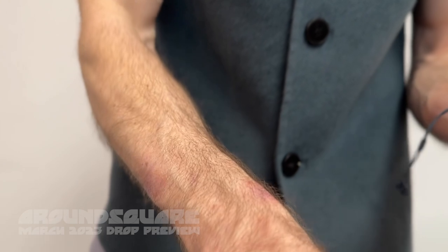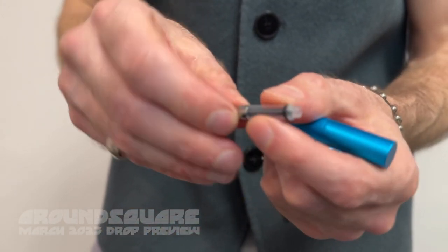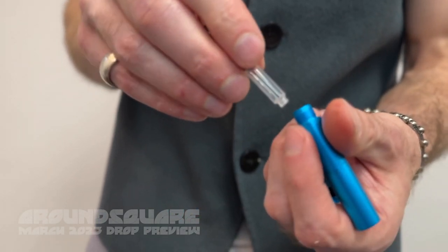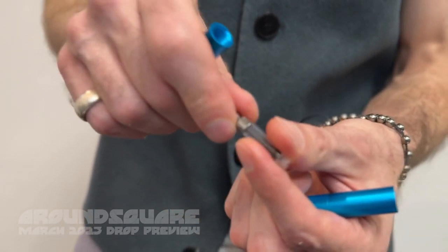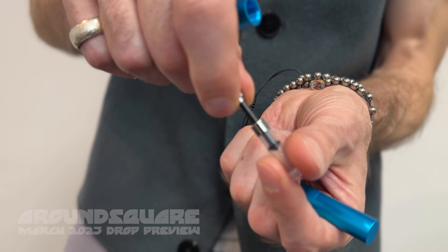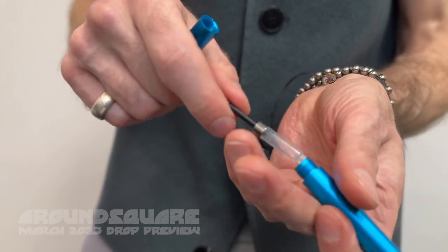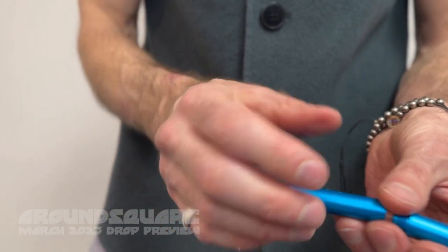If you want to use bottled ink, you can use one of these little converters - this is the Kaweco mini converter. It's a piston and it clicks down just the same way. Then you pull the little plunger up, dip it into the ink, pull the little plunger up, this recess fills with ink and you're off to the races.